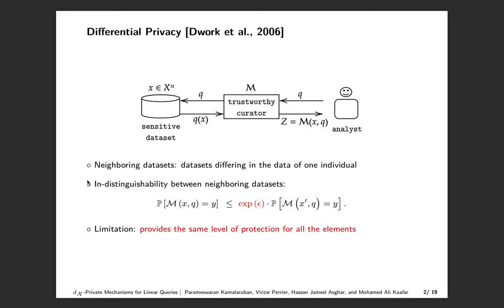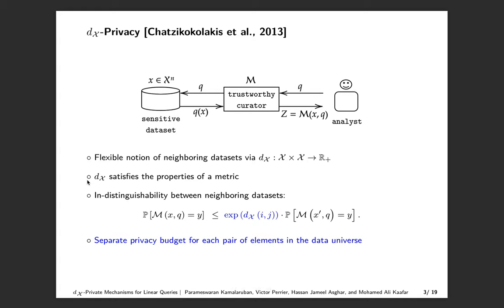One limitation of this definition is that it provides the same level of protection for all the attributes of the dataset. In many scenarios, a more flexible notion of neighboring datasets may be more useful. For instance, in some domains, it might be more natural to measure the distinguishability between two datasets by some generic metric DX defined on the data universe X.